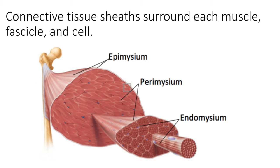The fascicles are surrounded by perimysium — 'peri' means around. Many fascicles bound together by perimysium create the entire muscle. Working further inside, each muscle cell is surrounded by a thin areolar connective tissue called endomysium — 'endo' means inner. So many muscle cells bound by endomysium create a fascicle, many fascicles bound by perimysium create the muscle, and the whole muscle is surrounded by epimysium.